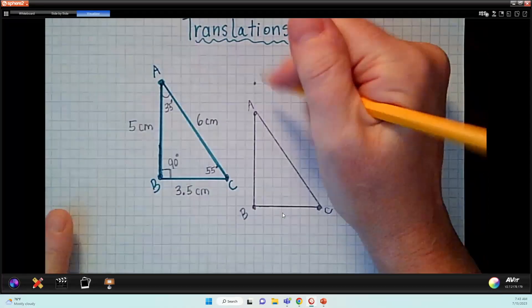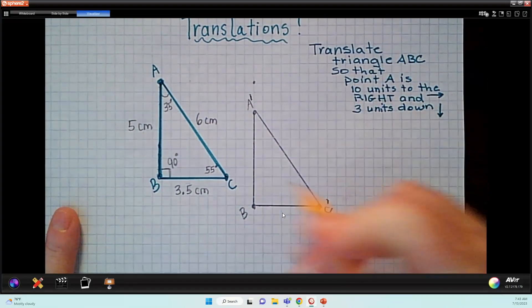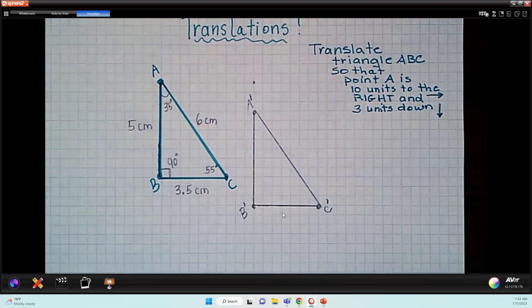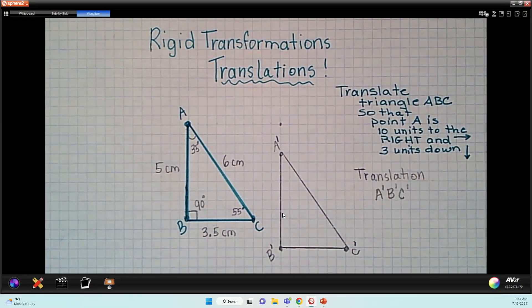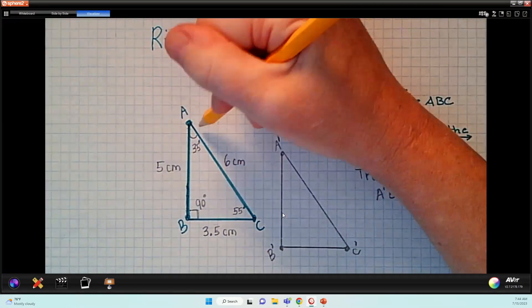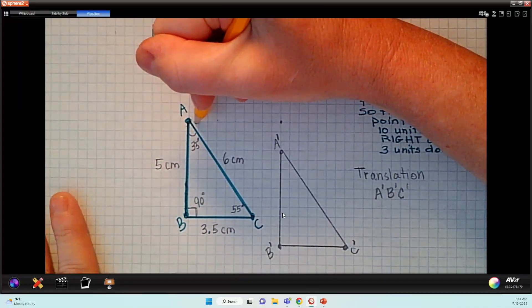Okay. Now, all I have to do is connect my A and my C, my hypotenuse, and I've just translated. Now, how do we code that this is a copy? We use these little dashes, these little apostrophes, and this lets us know that this is the copy of the original shape.